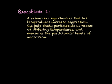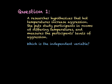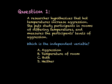Now, some quick questions. A researcher hypothesizes that hot temperatures increase aggression. She puts study participants in rooms of differing temperatures and measures the participants' levels of aggression. In this situation, which is the independent variable? If you said B, that is the correct answer. From the first sentence, we see that the hypothesis states that hot temperatures increase aggression, so right away the researcher is predicting that temperatures have an effect on aggression, or that temperatures can change aggression. This indicates that temperature is the independent variable.